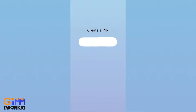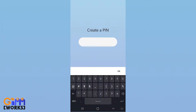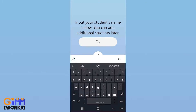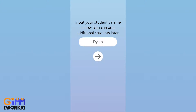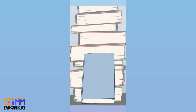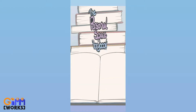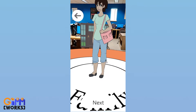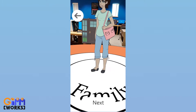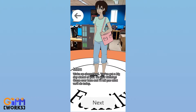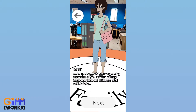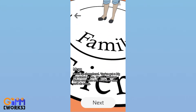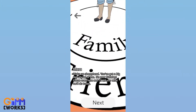The Personal Space Storybook is an augmented reality app designed to help those who have trouble learning and understanding the unspoken rules of personal space in social environments. It accomplishes this through a game where a student will play through a variety of short stories, needing to analyze the different social situations and determine what the proper distance is based on the relationship to the characters.